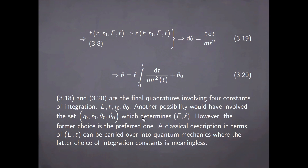However, the former choice — using energy and angular momentum — is the preferred one. This is due to the fact that a classical description in terms of energy and angular momentum can be carried over into quantum mechanics, whereas the choice involving initial coordinates and velocities is meaningless in that context.